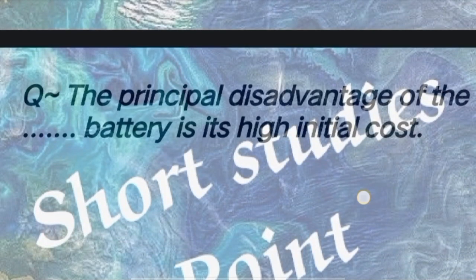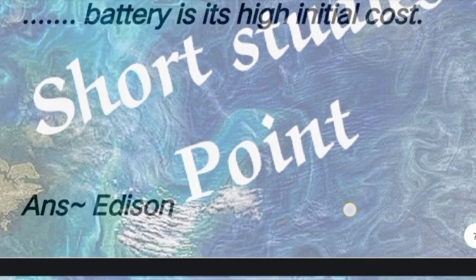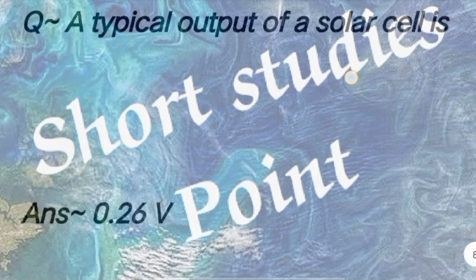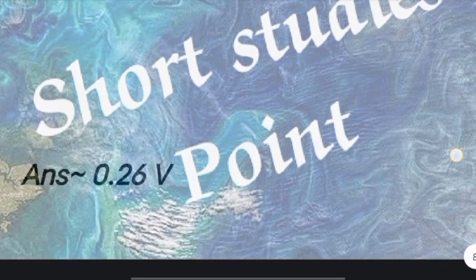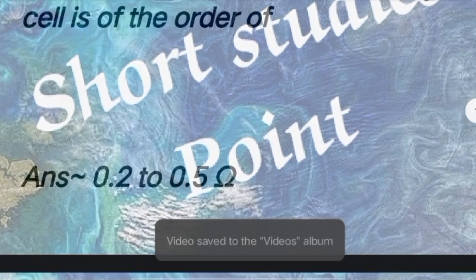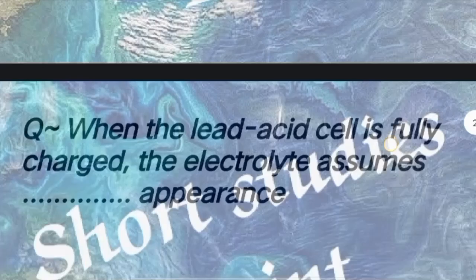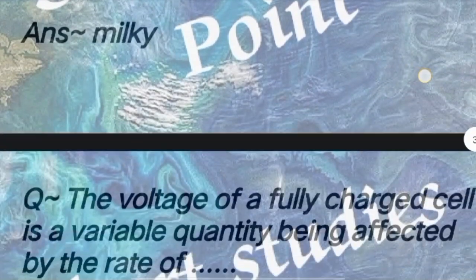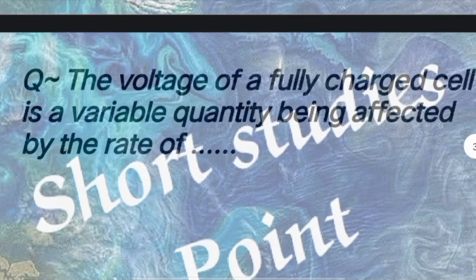Next question: The principal disadvantage of the dash battery is its high initial cost. Answer: Edison battery. Next question: A typical output of a solar cell is. Answer: 0.26 volts. Question: The internal resistance of a dry cell is of the order of. Answer: 0.2 to 0.5 ohm. Next question: When the lead acid cell is fully charged, the electrolyte assumes dash appearance. Answer: Milky.